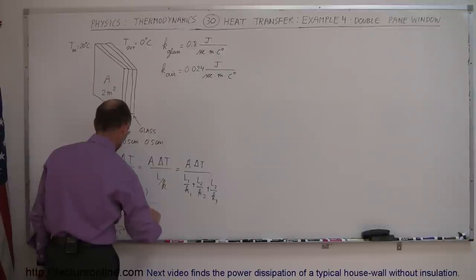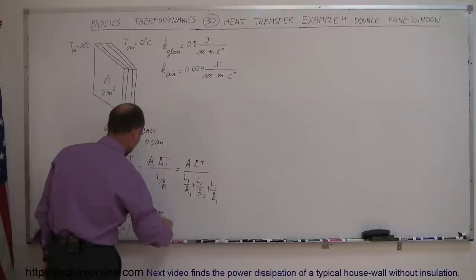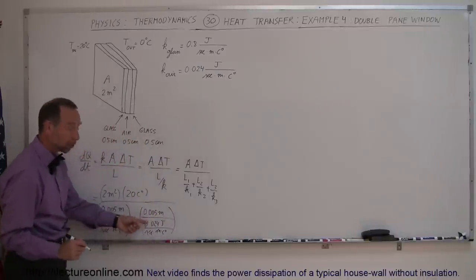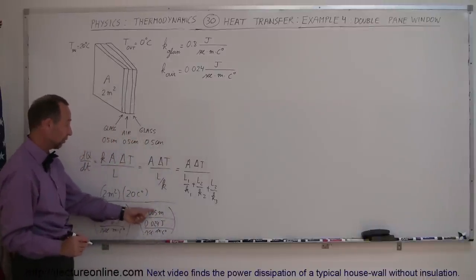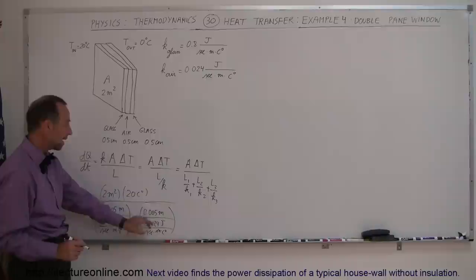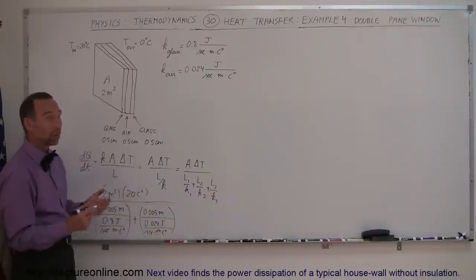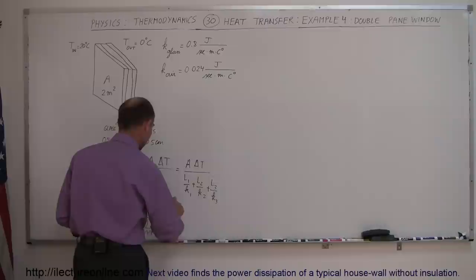This is the insulating layer that makes it very difficult for heat to travel through a double pane window. Here we get 0.005 meters divided by 0.024 joules per second times meters times centigrade degrees. Notice, since this in itself will be a much bigger number, because 0.005 divided by this much smaller k will be a bigger number, it will make the overall fraction a smaller fraction.